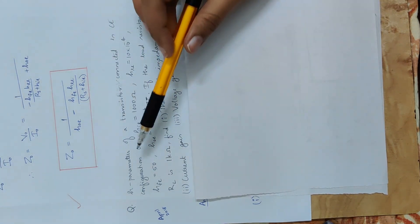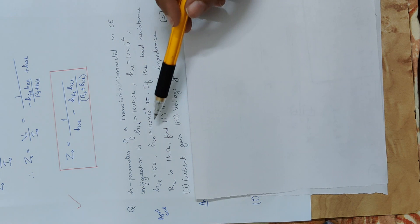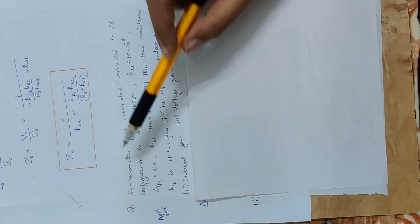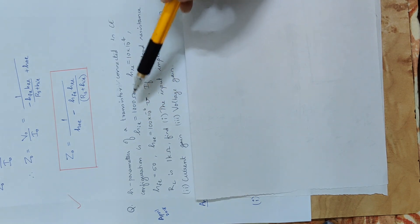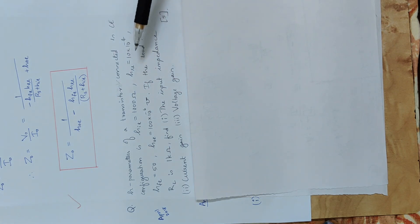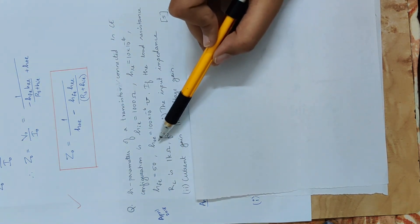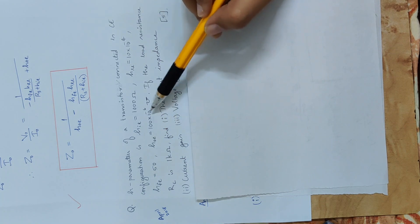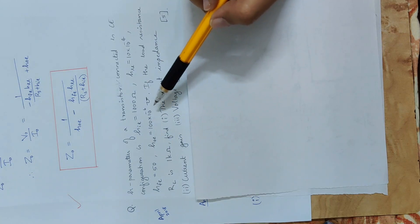Now, the question is, H-parameter of a transistor connected in common emitter configuration is HIE equal to 1000 Ohm, H-parameter is equal to 10 into 10 raised to minus 4, unit is HFE equal to 50, this is unit is equal to 100 into 10 raised to minus 6 mho. That is, it is admittance, output admittance.